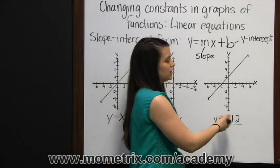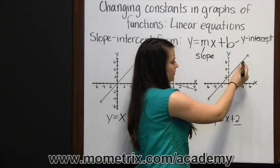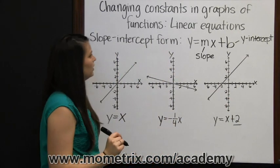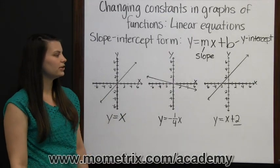If our y-intercept was negative four, then the graph of our line would go right through this point right here at negative four. That's how the slope and y-intercept affect a linear graph.